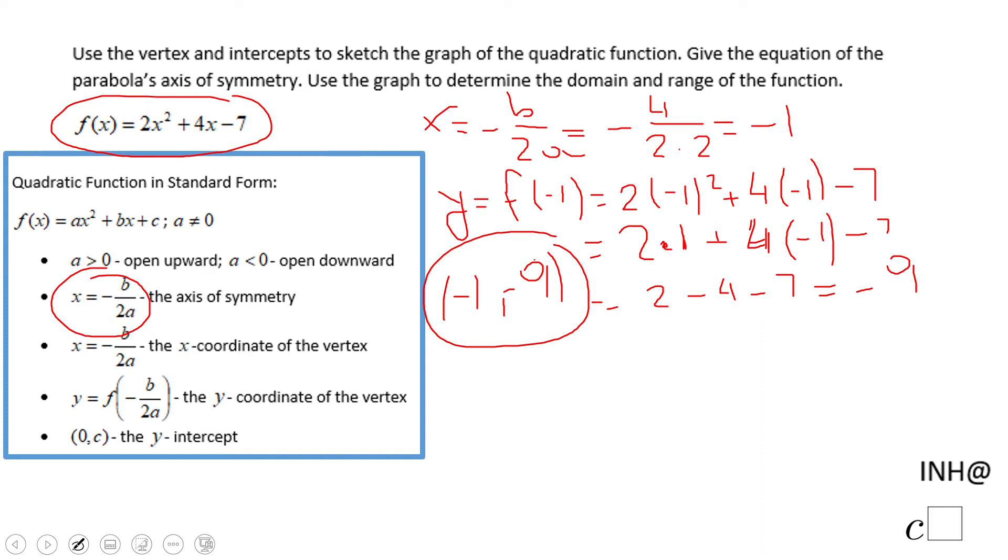Now we need to find the intercepts. For that reason, I'm going to find the special intercept, which is the y-intercept, which can be found by making x equals 0. So f of 0 will be 2 times 0 squared plus 4 times 0 minus 7. That will be negative 7. So that will be 0 and negative 7.